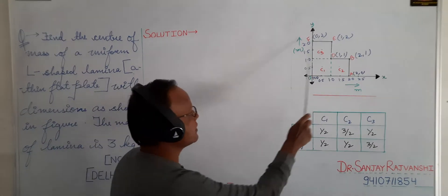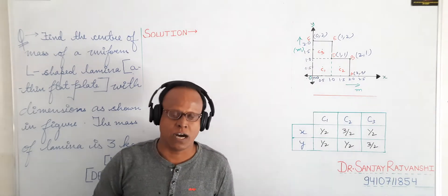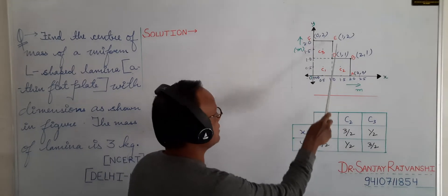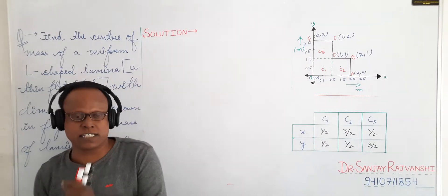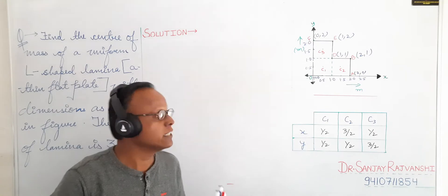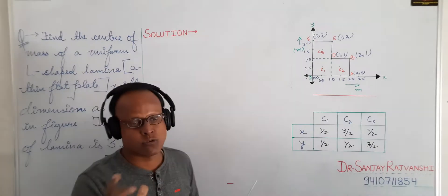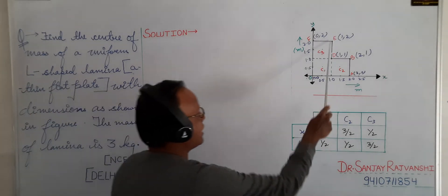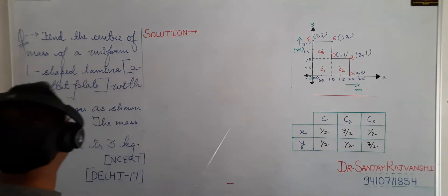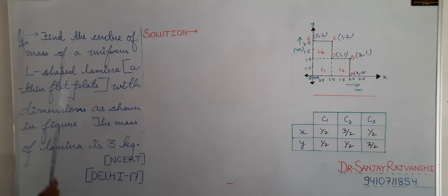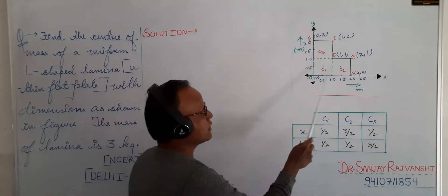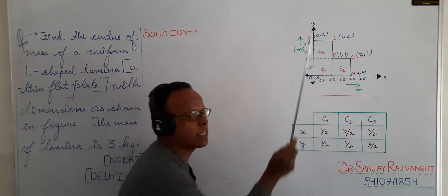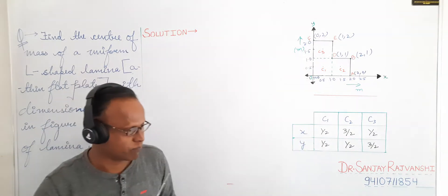So we divide this L-shaped plane lamina into three squares. Why? Because we know that the geometrical center of any shape — square, triangle — is the center of mass. So this is your L-shaped plane lamina with a mass of 3 kg. We divide it into 3 squares, so the mass of each square is 1 kg.